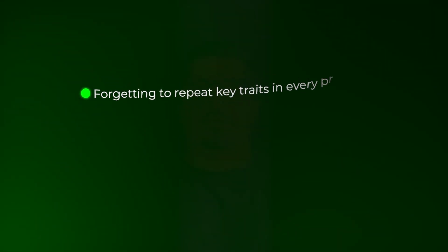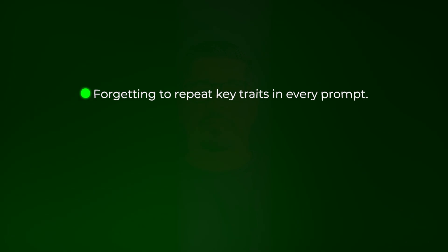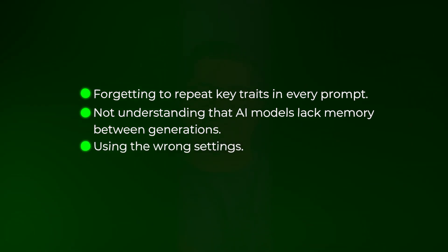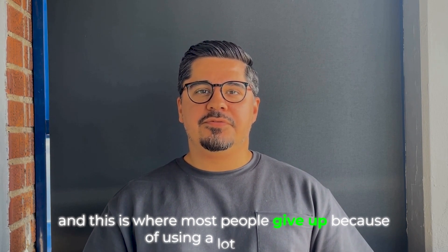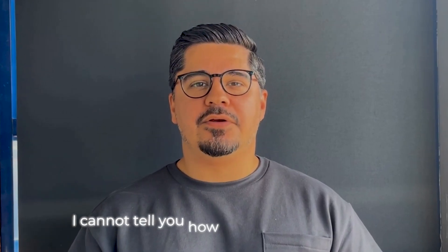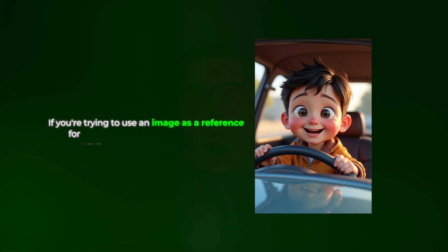The first mistake is forgetting to repeat key traits in every prompt. The second mistake is not understanding that AI models lack memory between generations. The third mistake is using the wrong settings — most people give up here because of credit costs or not having time to experiment. And the fourth mistake is using poor quality reference images, which is critically important if you're using an image as a reference for your characters or story.